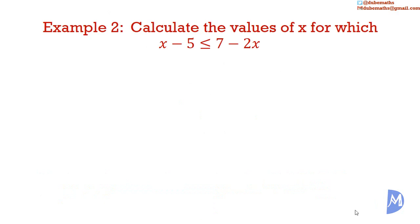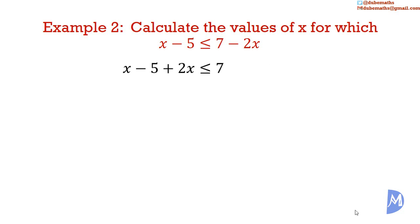Example 2: Calculate the values of x for which x subtract 5 is less than or equal to 7 minus 2x. Again, we want to put the x's on one side and the numbers on the other side. We will put the x's on the left-hand side. So we add 2x to both sides to remove the negative 2x from the right-hand side. Negative 2x plus 2x equals 0; x plus 2x equals 3x on the left-hand side. Now we add 5 to both sides: negative 5 plus 5 equals 0, and 7 plus 5 equals 12.